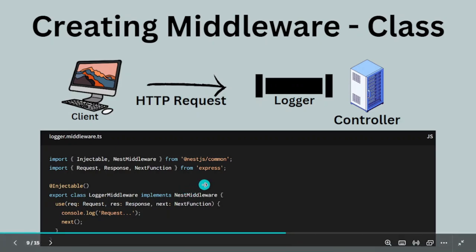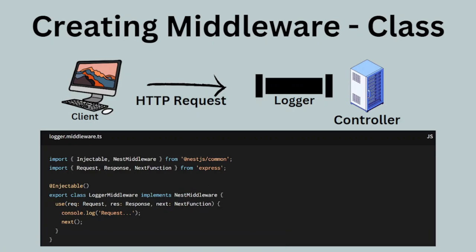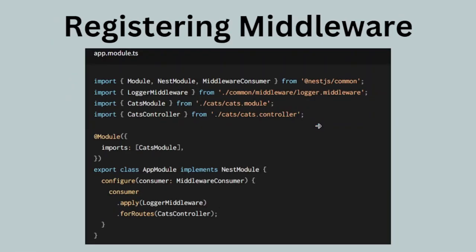Just because you have created a middleware doesn't mean the job is done — you have to define where this middleware is applicable, and that is done by registering it. There are basically two ways of registering a middleware: one way is to register it within a module, and the other way is to register it globally. Global means that the middleware will be applicable to all controllers and routes application-wide, while module-level registration applies it only to that particular module.